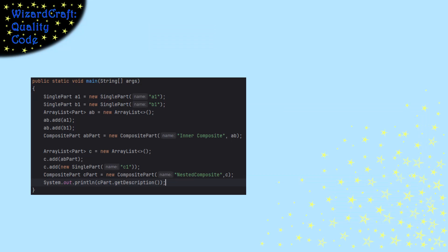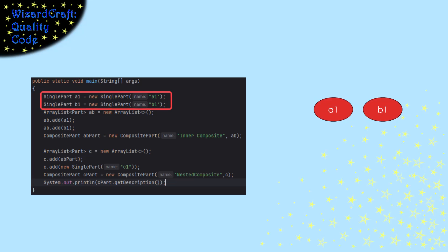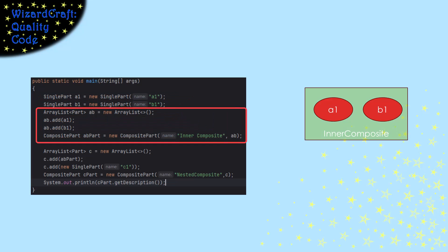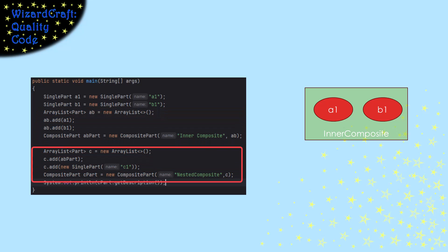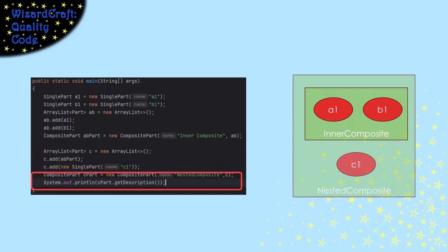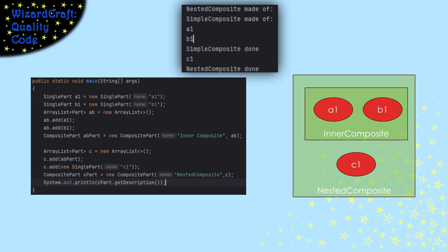To see how we use that, here's a main that builds a part and prints out its description. It creates two simple parts named A1 and B1, and then puts them together into a composite part named Inner Composite. Then it puts that inner composite part, and another simple part named C1, into a new composite part named Nested Composite. We ask for that object's description and we get this output.